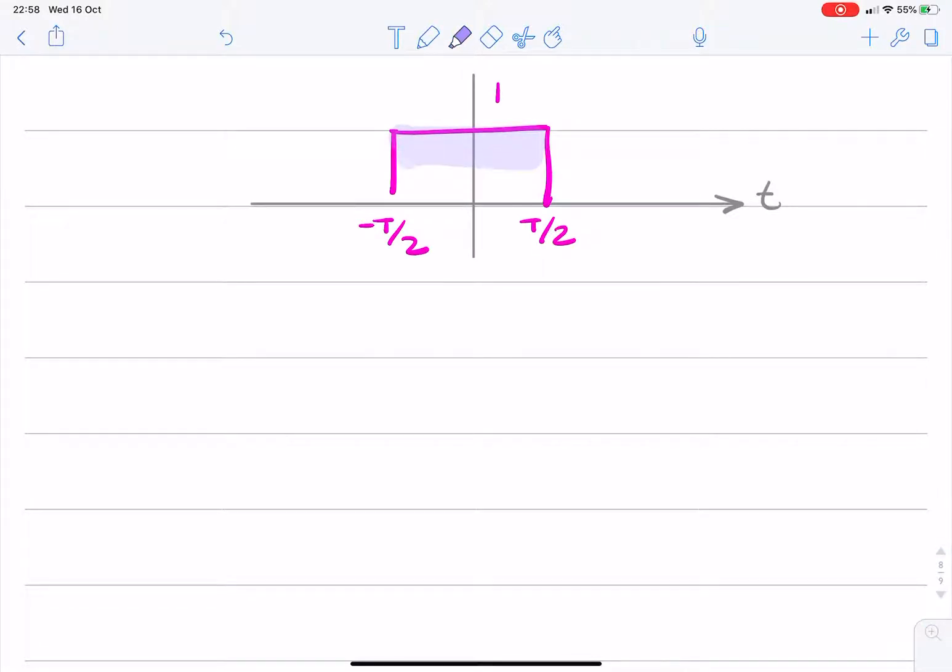And this is our x of t. And the question is about the Fourier transform of y of t. y of t is x of t squared.